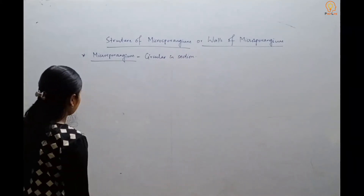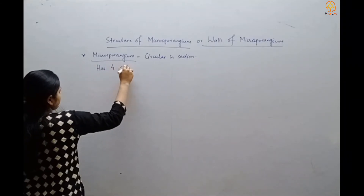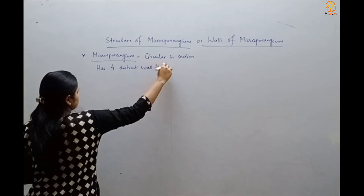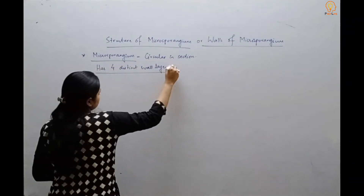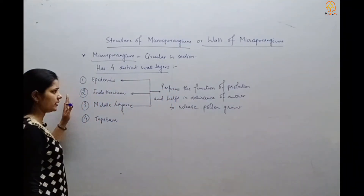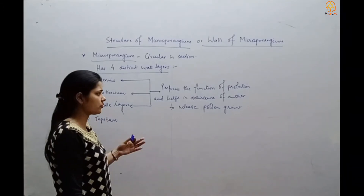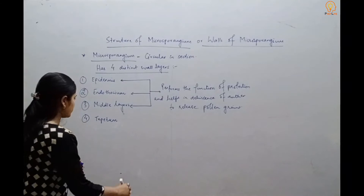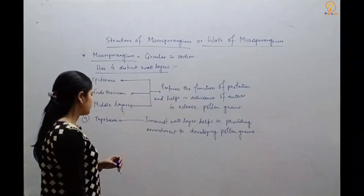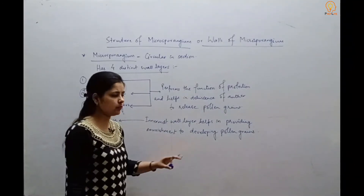The microsporangium, which is circular in cross-section, has four distinct wall layers. The outer layers perform the function of protection and also help in dehiscence of the mature anther to release pollen grains. The tapetum, which is the innermost wall layer, helps in providing nourishment to the developing pollen grains.